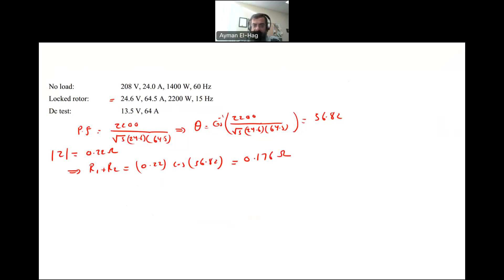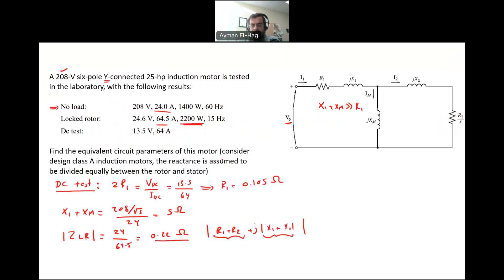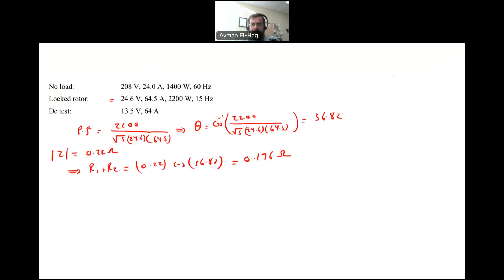But I already know R1. R1 is 0.105. From this I can find R2. R2 equals 0.176 minus R1 which is 0.105. This gives me a total resistance R2 equal to 0.0711 ohm.